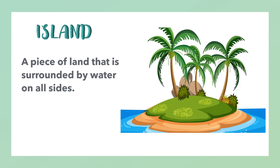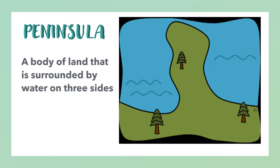Island: a piece of land that is surrounded by water on all sides. Peninsula: a body of land that is surrounded by water on three sides.